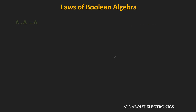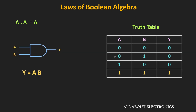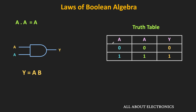The next law is a·a = a, meaning during the AND operation when both inputs are the same, the output is the same as the input. From the truth table: when a is 0, both inputs are 0 so output is 0; when a is 1, both inputs are 1 so output is 1. The output y follows the input, meaning y = a. This is also true for more than two inputs — for example, a·a·a·a is also equal to a.